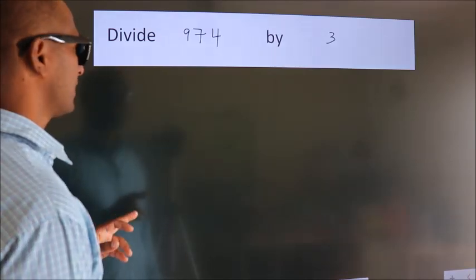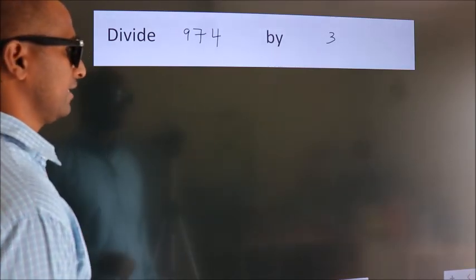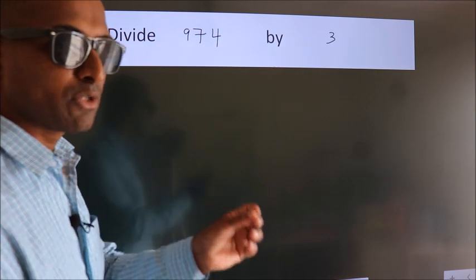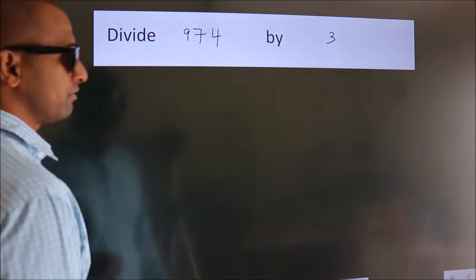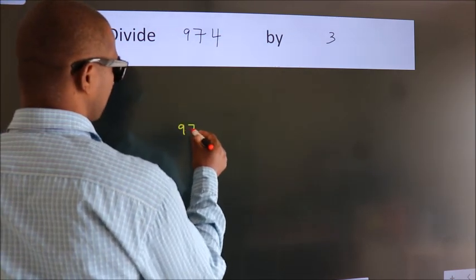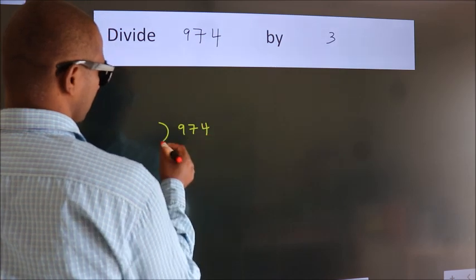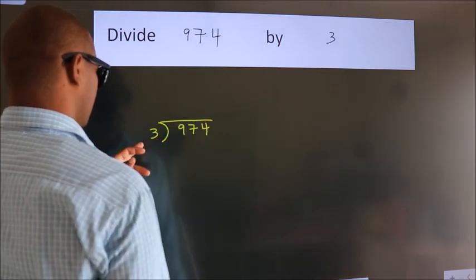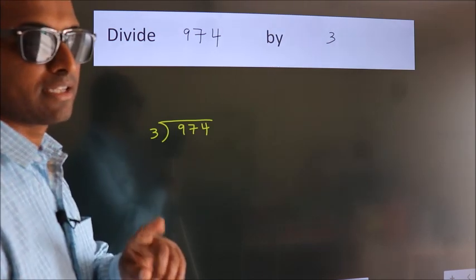Divide 974 by 3. To do this division, we should frame it in this way — 974 here, 3 here. This is your step 1.